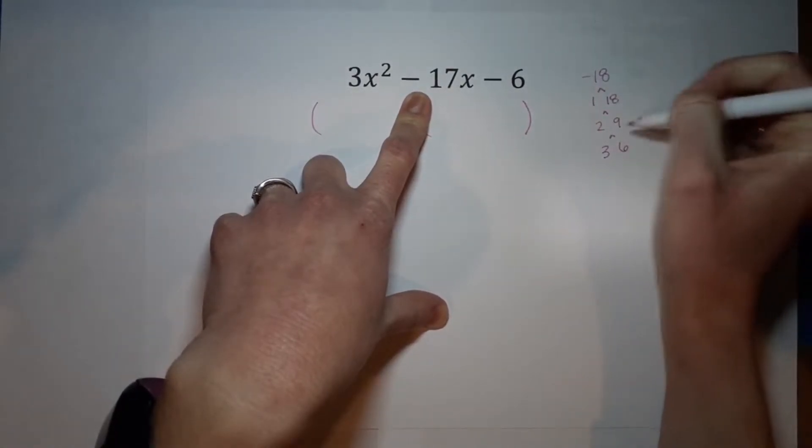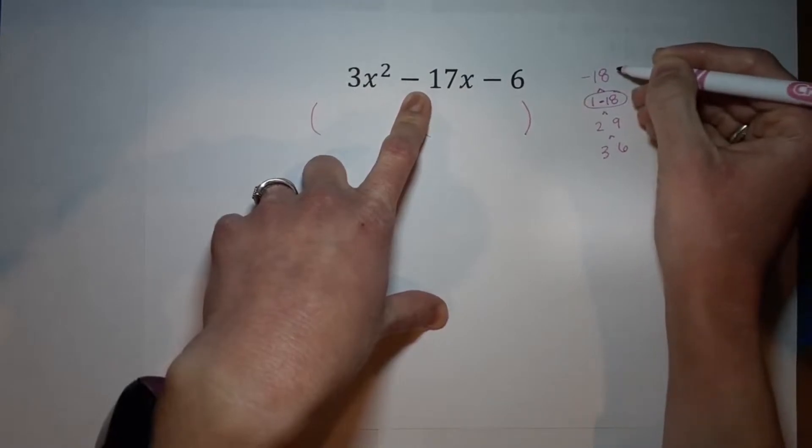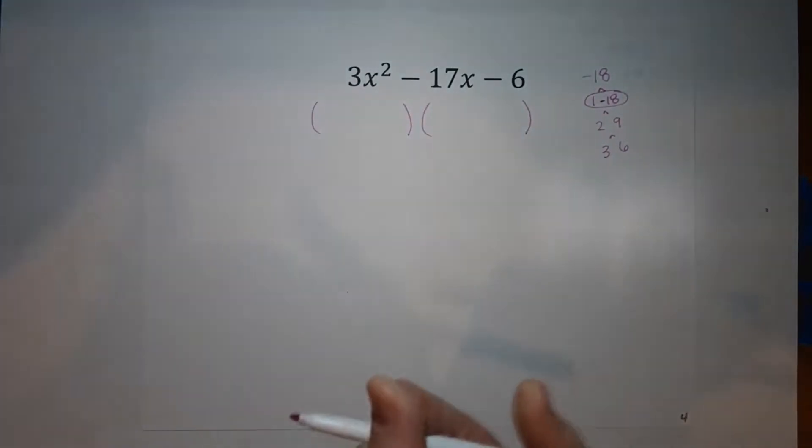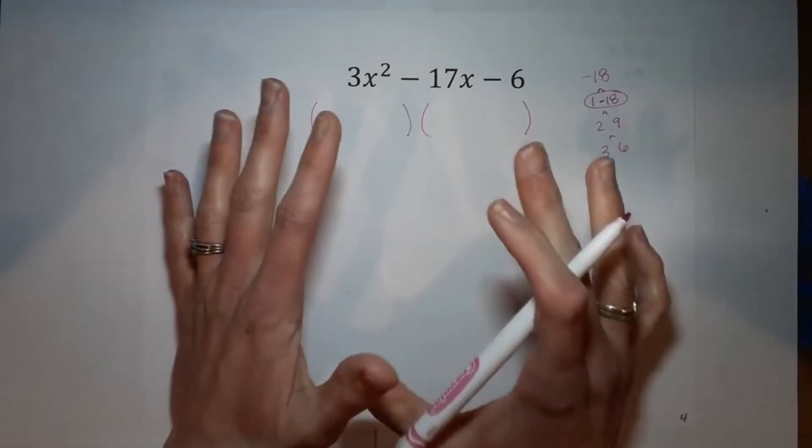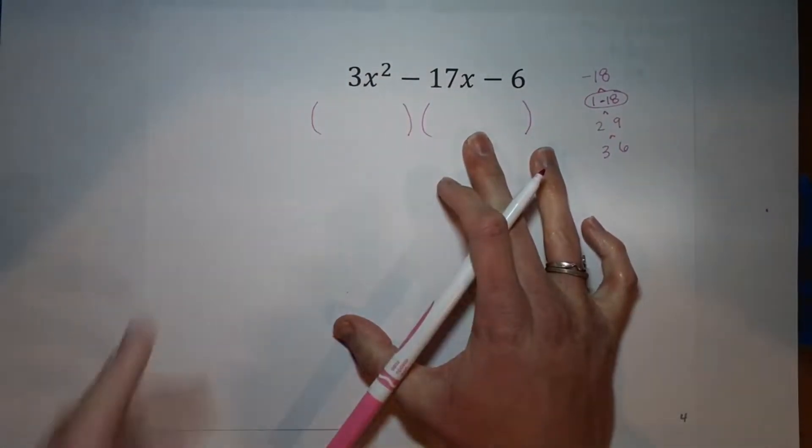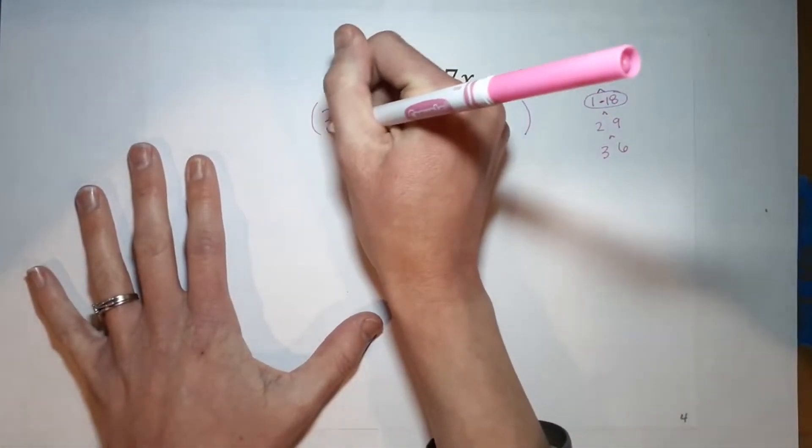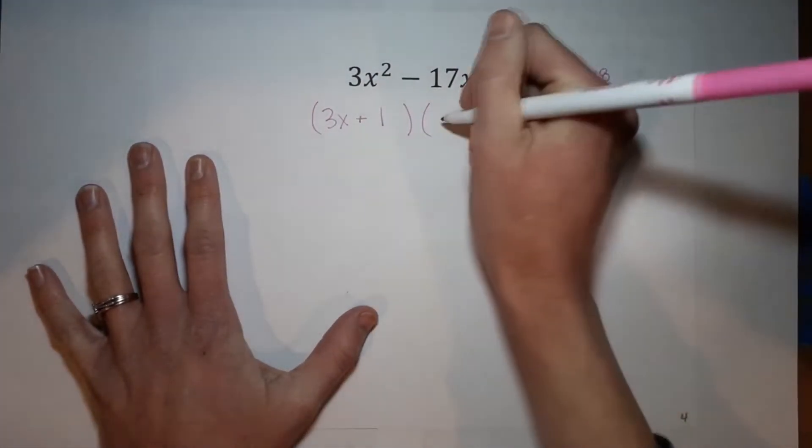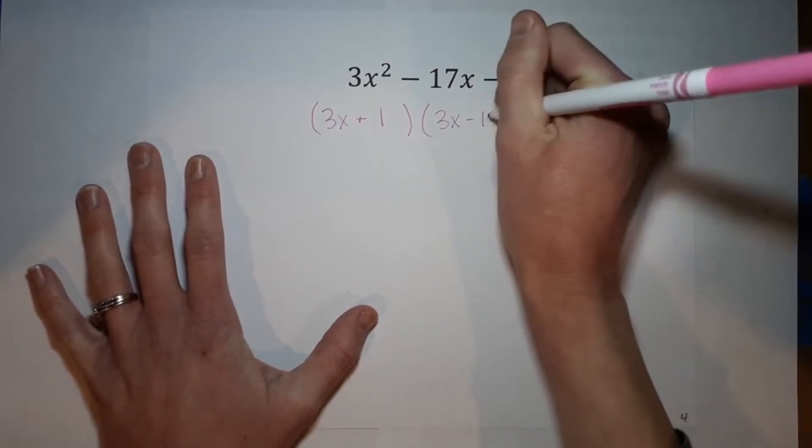For it to be negative, I need one of these to be negative in each of the pairs. So if I do a 1 times a negative 18, that gives me negative 18 when I multiply, and it gives me negative 17 when I add. Now, if this 3 weren't here, I would just write 1 and negative 18 and be done, right? But I have that 3 here. So what we're going to do is first, we're going to put the 3 with both of them. I'm going to put 3x plus 1 from here, and I'm going to put 3x minus 18 here.